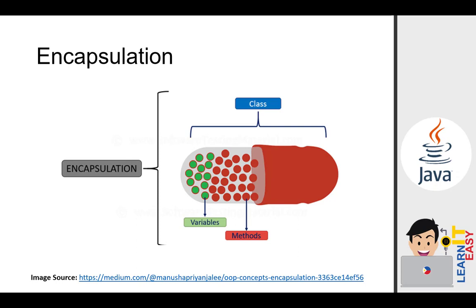The next pillar of object-oriented programming is encapsulation. To give you a bird's eye view of what encapsulation means, take a look at this photo. This photo depicts a capsule with powdered medicine inside, but we can't see it because it's wrapped in a jacket or insulation to protect whatever is inside. We don't know the contents of the capsule, but all we know is that when we take it, we'll get better from whatever illness we have.